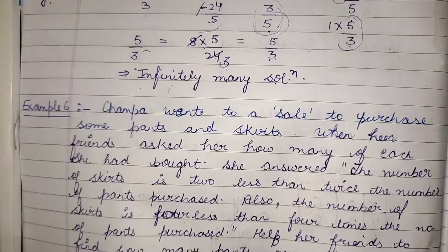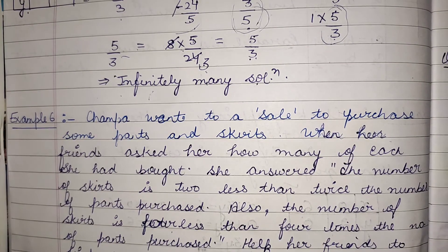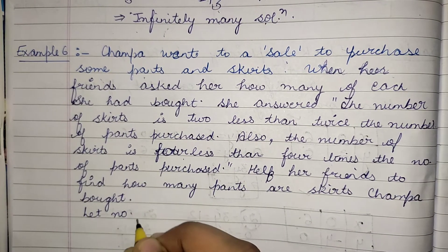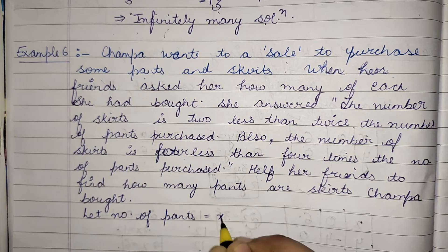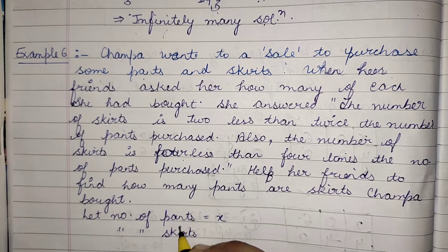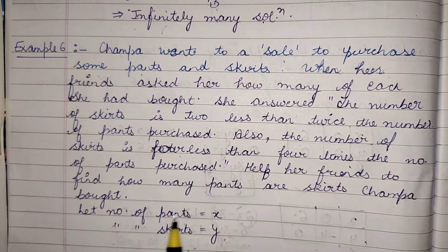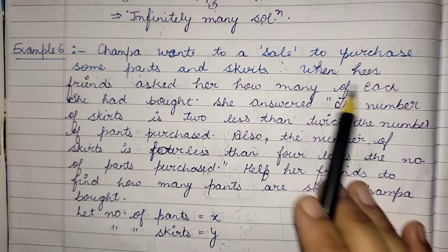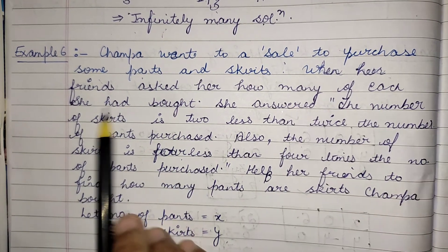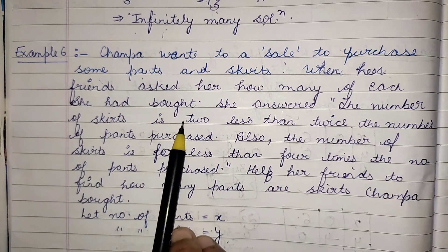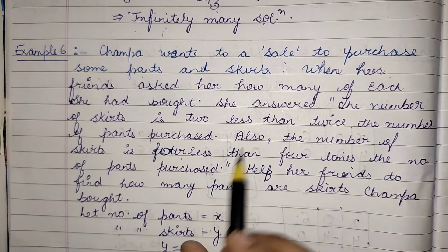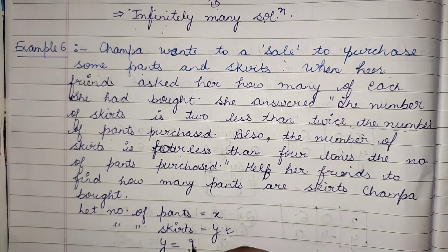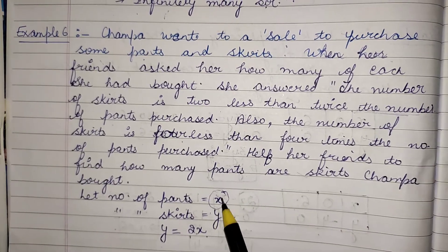Example 6: Jumpa wants to purchase some pens and some skirts. Let the number of pens purchased be x and the number of skirts be y. The question says the number of skirts is 2 less than twice the number of pens purchased. Twice the number of pens is 2x, and 2 less than that gives the first equation.